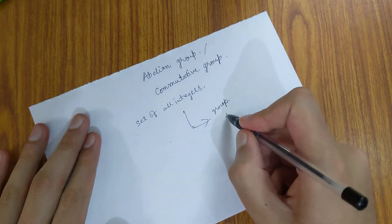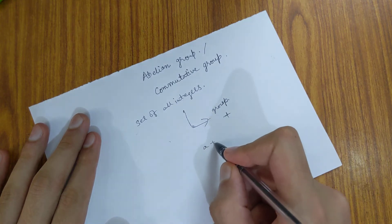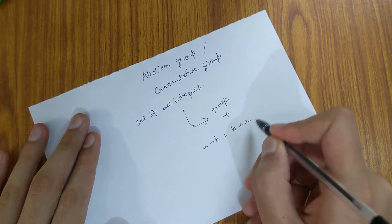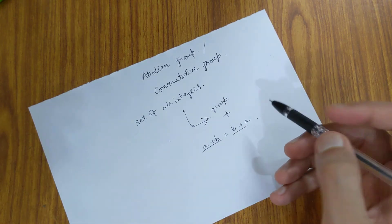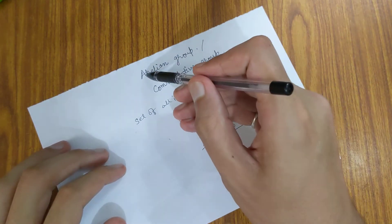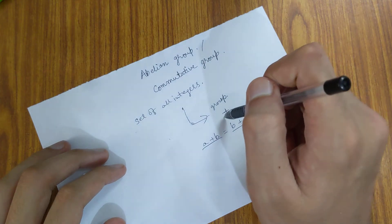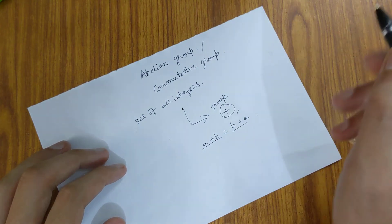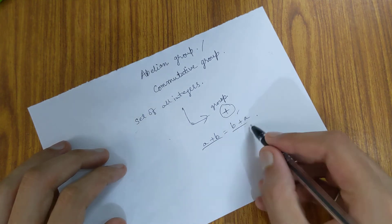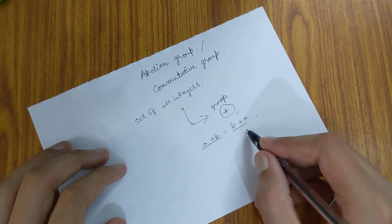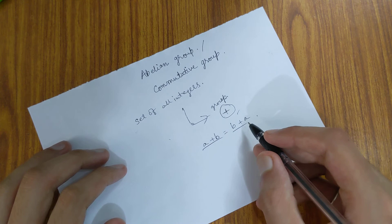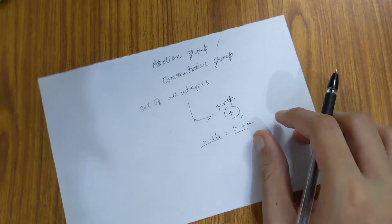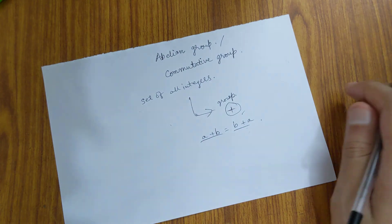So this addition operation, if applied on two group elements like a plus b, is the same as b plus a. Hence this group is called an abelian group if we are considering under the addition operation. This is basically holding the commutative property. Hope you understood the concept of abelian group, thank you friends.